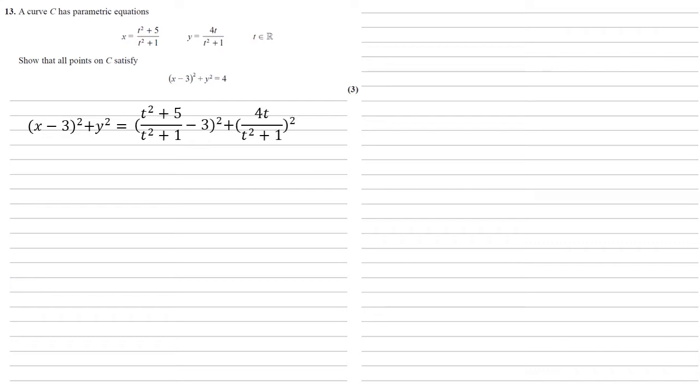So substituting x equals t squared plus 5 over t squared plus 1 and y equals 4t over t squared plus 1 into the equation we get this. Now look at that left hand bracket. We've got a fraction minus 3. So if we turn that 3 into a fraction also over t squared plus 1, then we can do the subtraction, bring the fractions together. Well, 3 becomes 3t squared plus 3 over t squared plus 1, which is multiplied top and bottom by t squared plus 1.